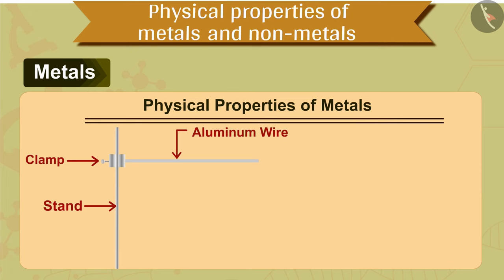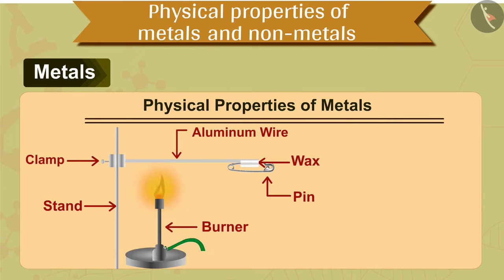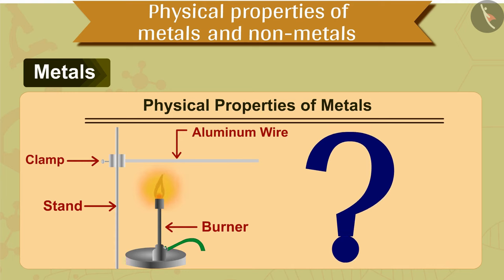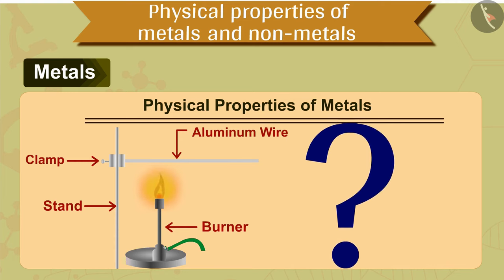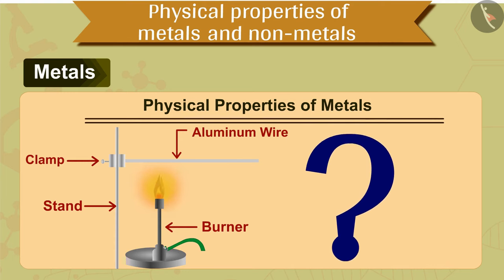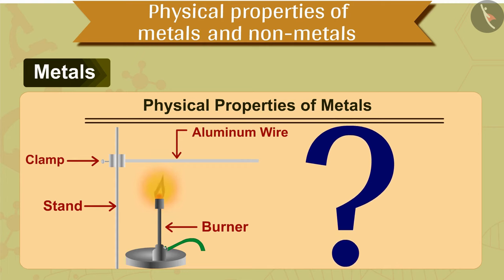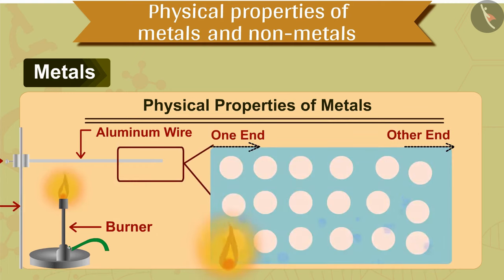Tie an aluminum wire to a stand using a clamp. Stick a pin using wax on the open end of the wire. Heat the wire near the clamp with a burner. After a while you will notice that the pin pasted with wax falls as the wax melts.